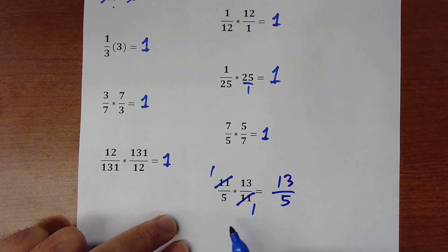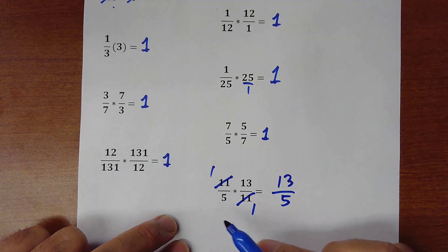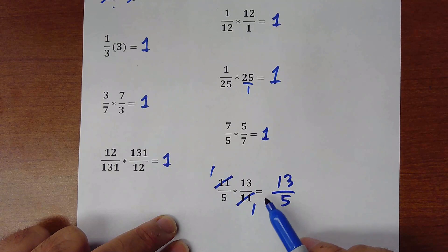So in this case it's not a 1 because we are not doing the inverse property. We are multiplying two fractions but they are not the same fractions.